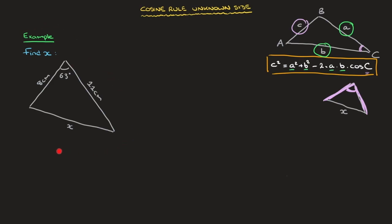Let's go ahead and solve this example. We need to find the side length x. Looking at the information in this triangle, we can see that we have the other two side lengths as well as the angle between them. Consequently, we can use the cosine rule to find x. Thinking of x as c, we get: x squared equals eight squared plus eleven squared minus two times eight times eleven times cosine of 63.